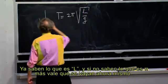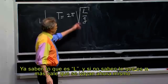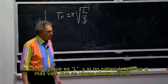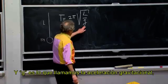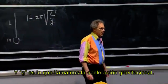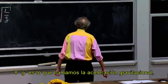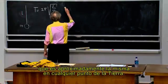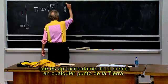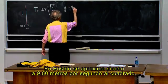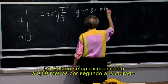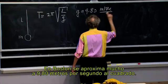You already know what L is. If you don't know what pi is, you might as well leave right now. And G is what we call the gravitational acceleration, which is approximately the same everywhere on Earth, but it is very close in Boston to 9.80 meters per second per second.